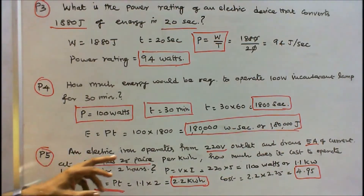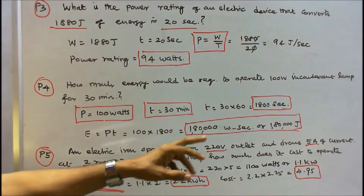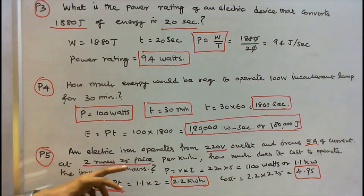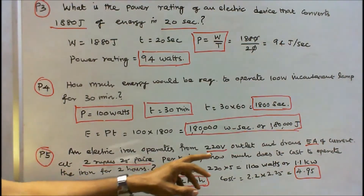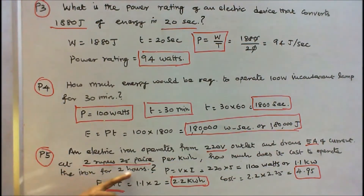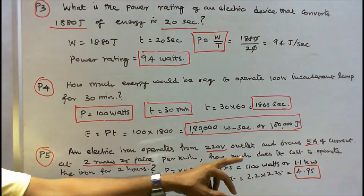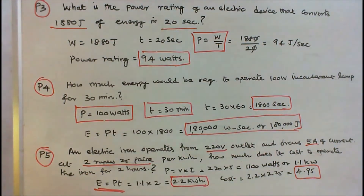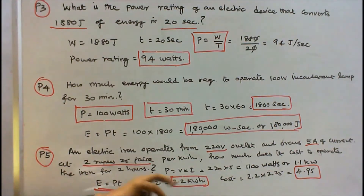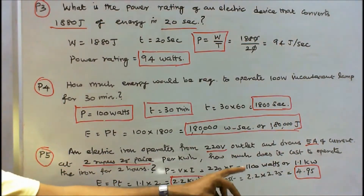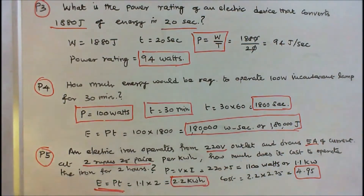Problem 5: An electric iron operates from a 220-volt outlet and draws 5 amps of current at Rs. 25 per kilowatt-hour. How much does it cost to operate the iron for 2 hours? P = V × I = 220 × 5 = 1100 watts or 1.1 kilowatts. Energy E = P × t = 1.1 × 2 = 2.2 kilowatt-hours. Cost = 2.2 × Rs. 2.25 = Rs. 4.95.